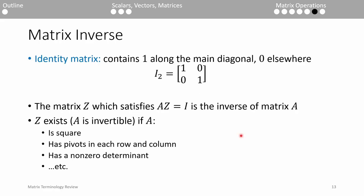Before discussing the matrix inverse, we should introduce the identity matrix. The identity matrix, commonly denoted I, contains 1s along the main diagonal and 0s everywhere else. I usually has a subscript denoting its size. For instance, I sub 2 means that it's a 2 by 2 identity matrix. The identity matrix is important because it helps define the matrix inverse.